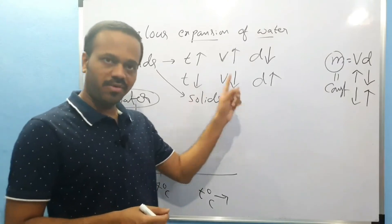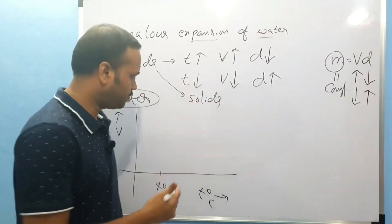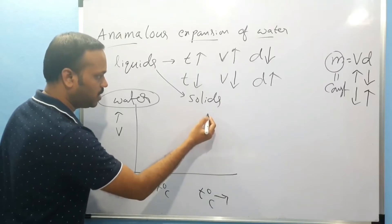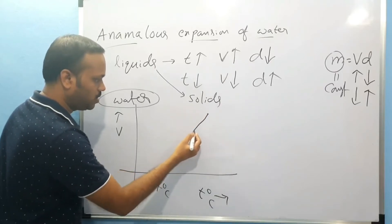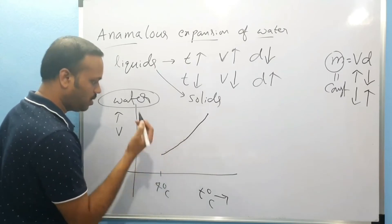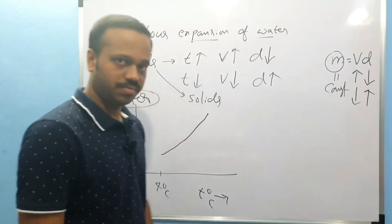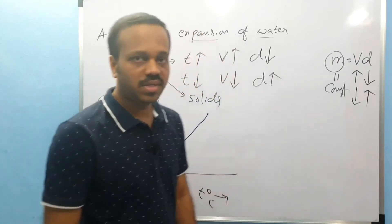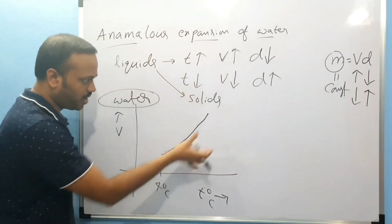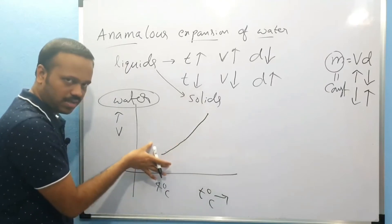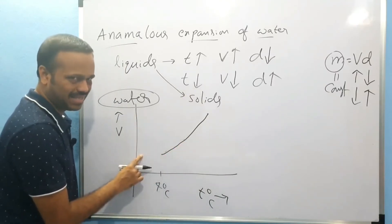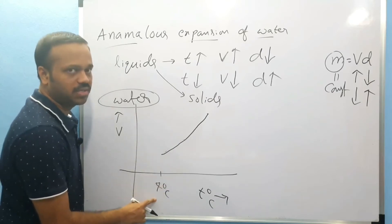As temperature decreases, the volume decreases. When they contract, volume decreases up to 4 degrees.